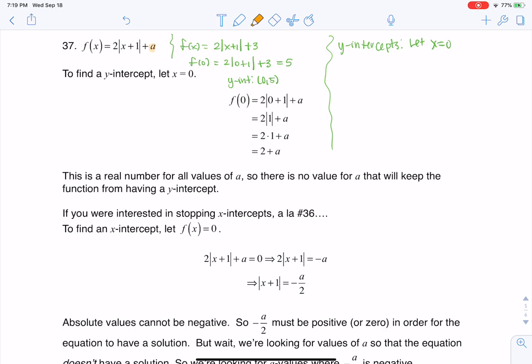So this is an example of where I found an A value, specifically positive 3, and I came up with a y-intercept. And this problem in 37 is asking us to do just the opposite. It says find any of these A values such that there are no y-intercepts.